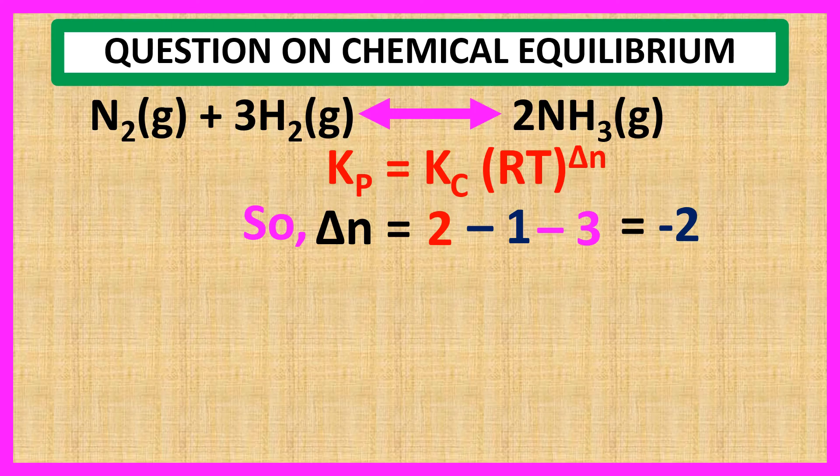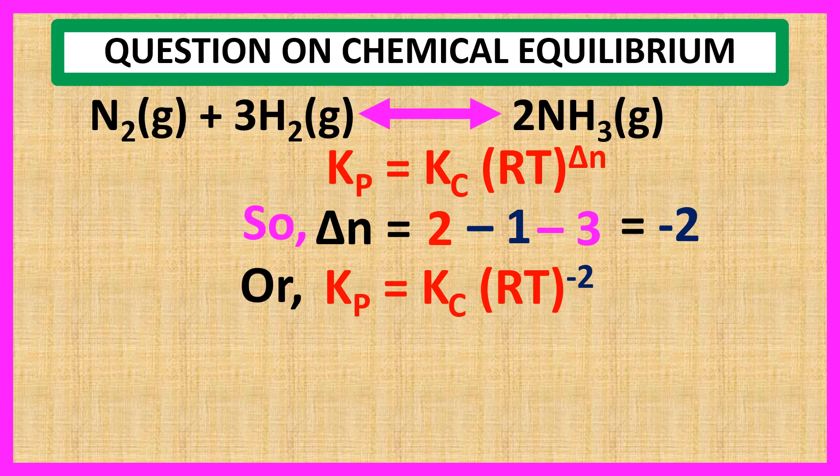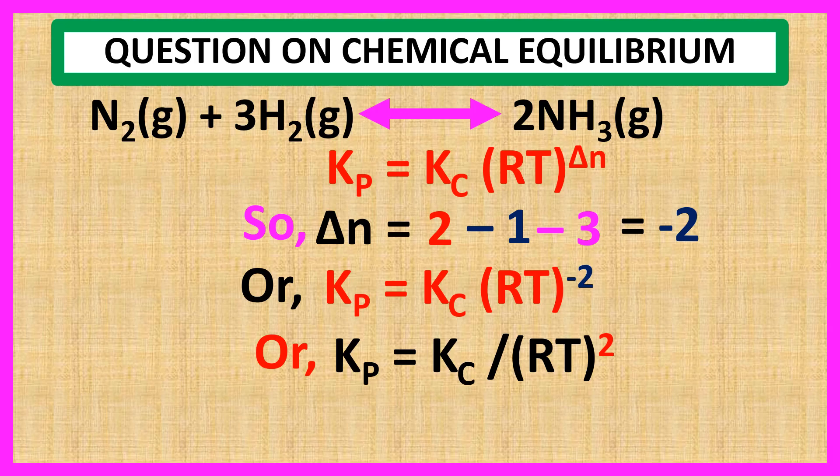Now we put the value of delta N in our previous equation. Kp is equal to Kc into RT to the power minus 2, or Kp is equal to Kc by RT square. So, Kp less than Kc.